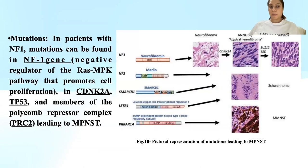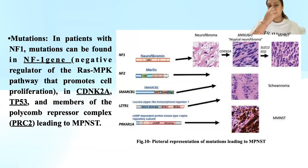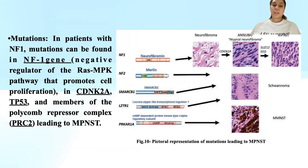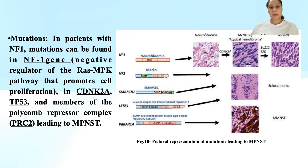The main pathogenesis of MPNSTs lies in mutations seen in patients with NF1. The NF1 gene is responsible for production of neurofibromin, which is a negative regulator of the RAS-MAPK pathway. Mutation in this gene causes loss of the negative regulator, further promoting cell proliferation and leading to MPNSTs. Other mutations can also be seen in CDKN2A, TP53, and PRC2.